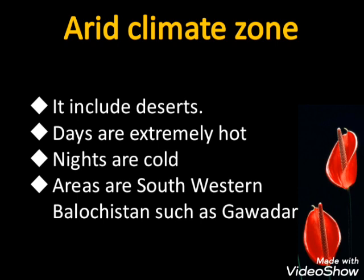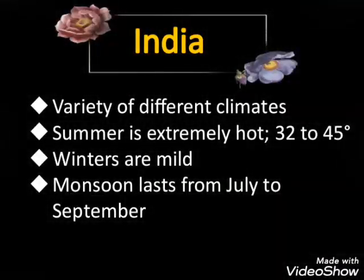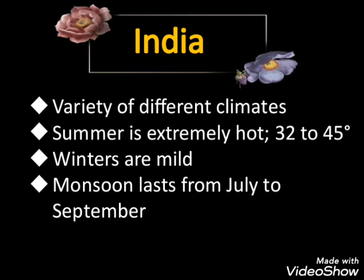The arid climate zone includes the deserts, where days are extremely hot and nights are cold. This region consists of southwestern Balochistan, such as Gwadar. India consists of a variety of different climates. Summers in majority of areas are extremely hot, with temperatures ranging from 32 to 45 degrees Celsius, while winters are mild except in northern areas, which receive heavy snowfall due to high altitude.